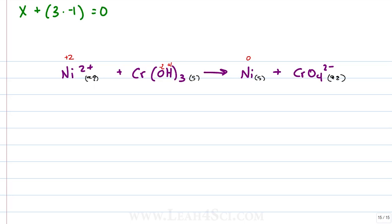To simplify, we have x - 3 for 3 times -1 is equal to 0, plus 3 to cancel out plus 3. That gives me x is equal to +3. Chromium has an oxidation number of +3.